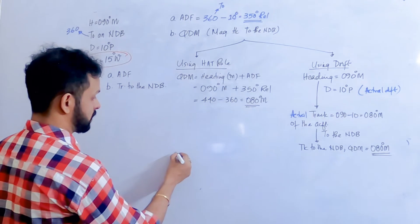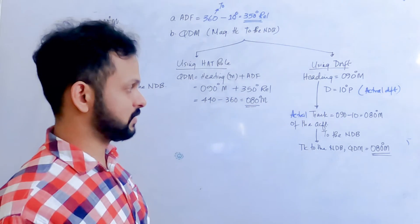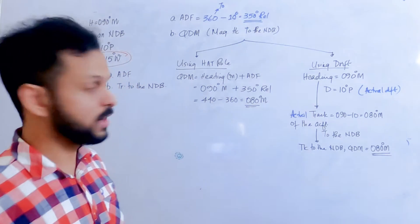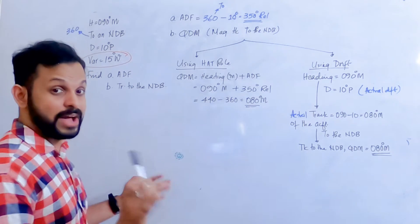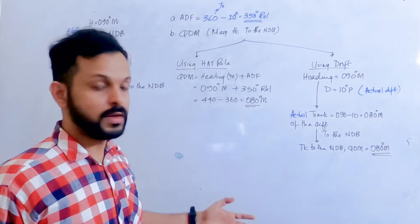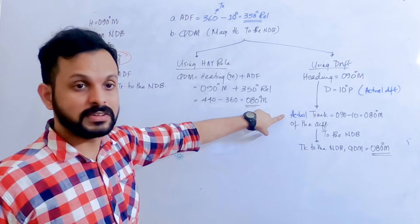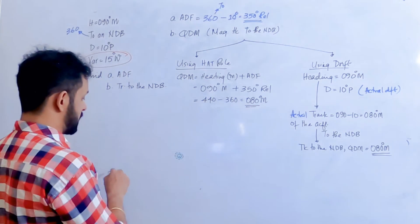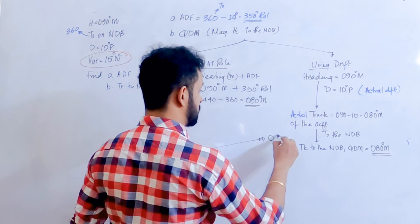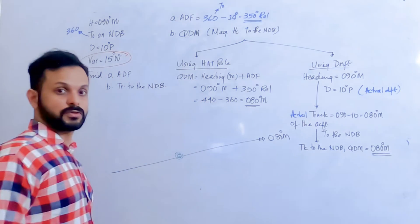Let's draw a diagram to get a better perspective. Always look at the track of the aircraft before you draw the lines — this is very helpful for upcoming problems as well. The track of the aircraft is 080 degrees, so draw a line that looks like almost 080 degrees. The track is 080 degrees magnetic.